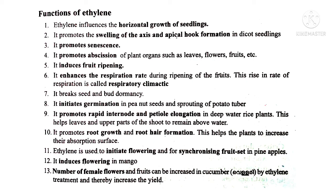Summary of ethylene's functions: It influences the horizontal growth of seedlings. It promotes swelling of the axis and apical hook formation in dicot seedlings. It promotes senescence and abscission of plant organs such as leaves, flowers, and fruits. It induces fruit ripening and enhances the respiration rate during ripening — this rise is called respiratory climacteric. It breaks seed and bud dormancy, initiates germination in peanut seeds, and promotes sprouting of potato tubers.